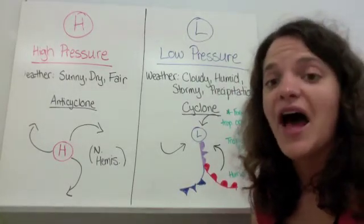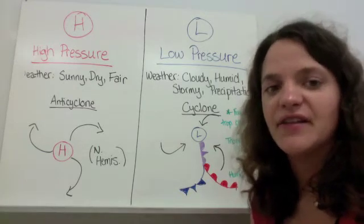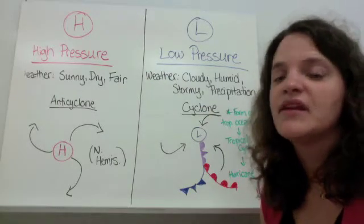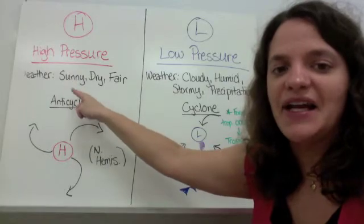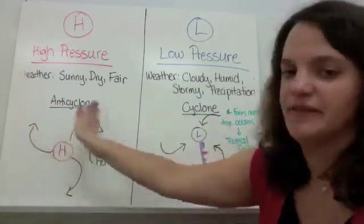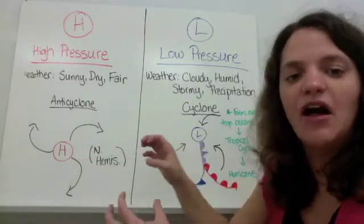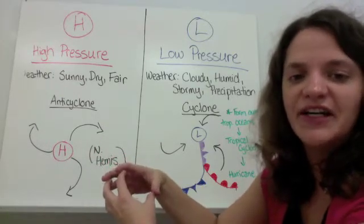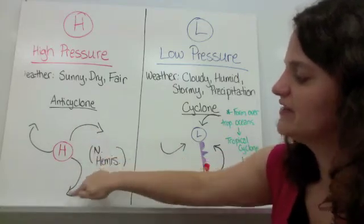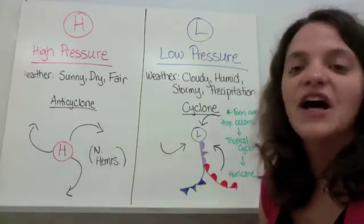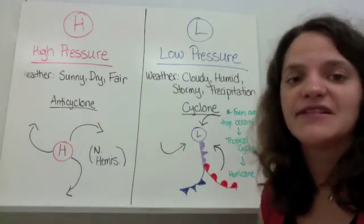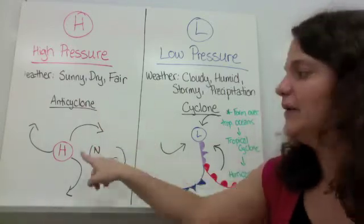A high pressure system is indicated on a weather map with a capital H, often in red. Weather associated with high pressure is sunny, dry, and fair. When air rotates around a high pressure system, it moves away from the center — the air spreads out and leaves. In the northern hemisphere, the Coriolis effect causes it to veer right, creating a clockwise spin called an anti-cyclone. Despite the name, an anti-cyclone actually brings very pleasant, sunny, dry weather.